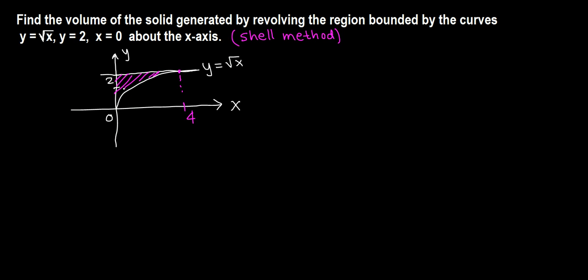Now we want to revolve this shaded region about the x-axis. We're going to use the shell method here. When we draw the sample rectangle of small thickness, that should be parallel. For shell method we take parallel, so let's draw a parallel rectangle.